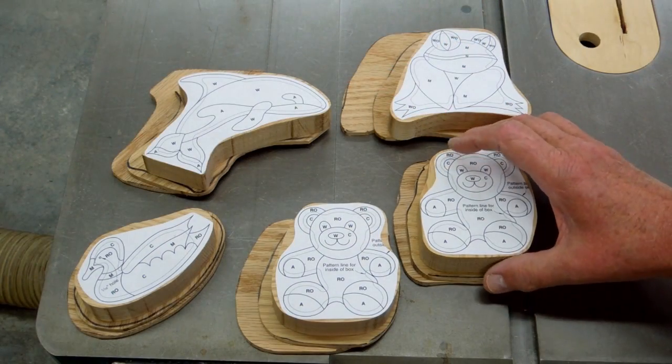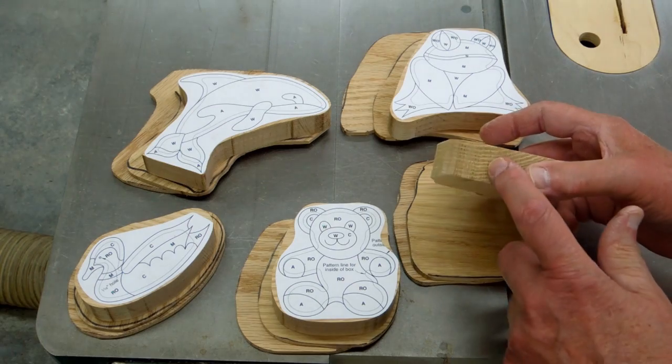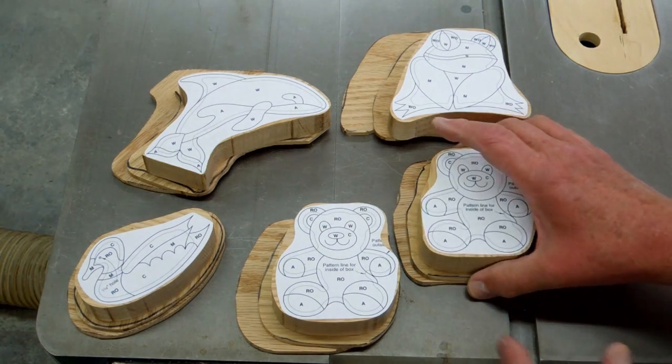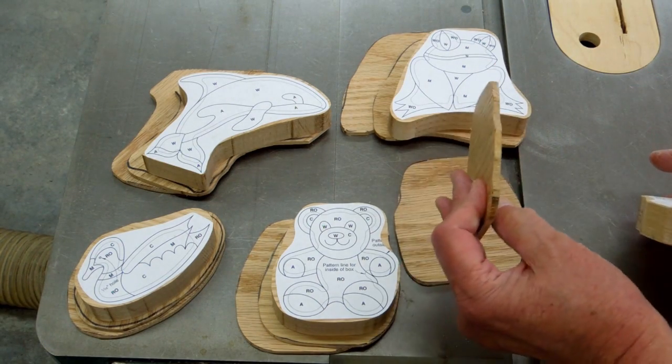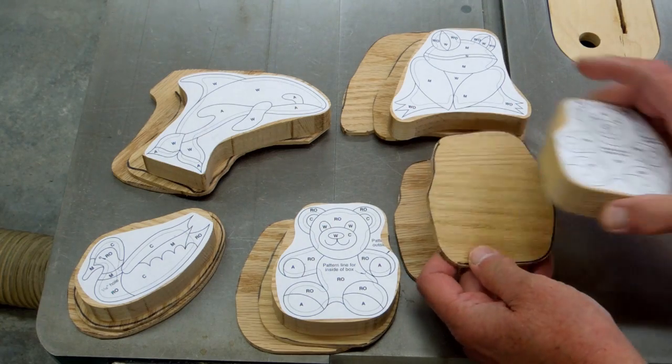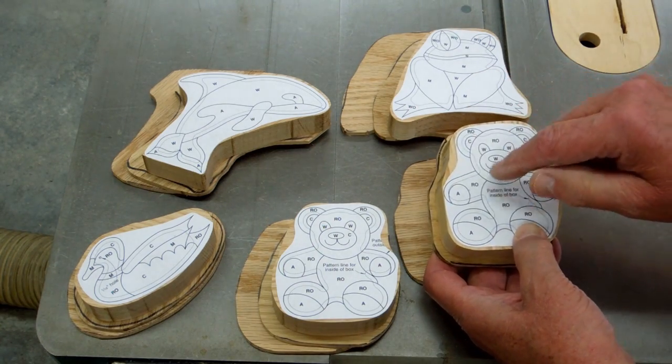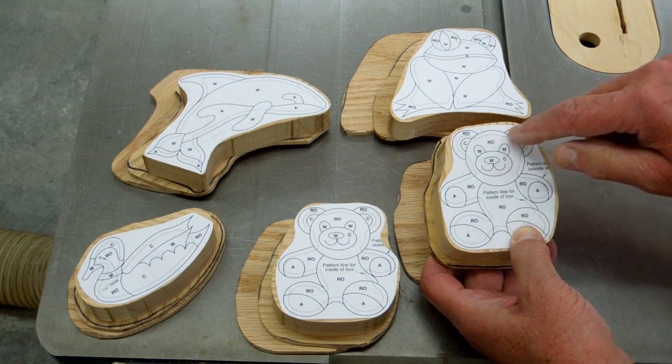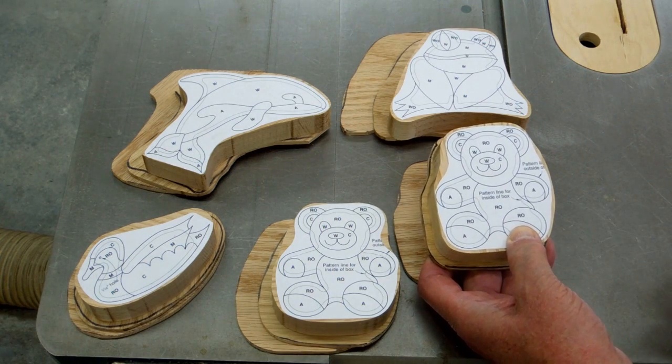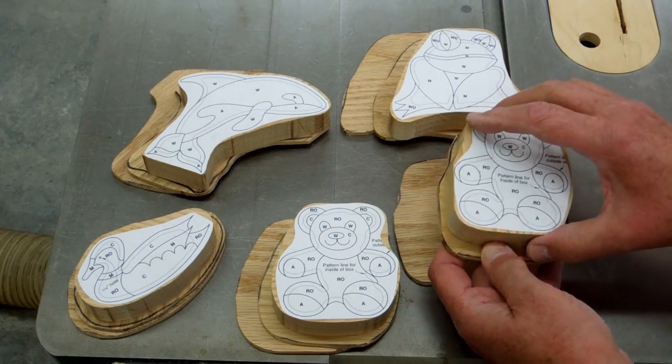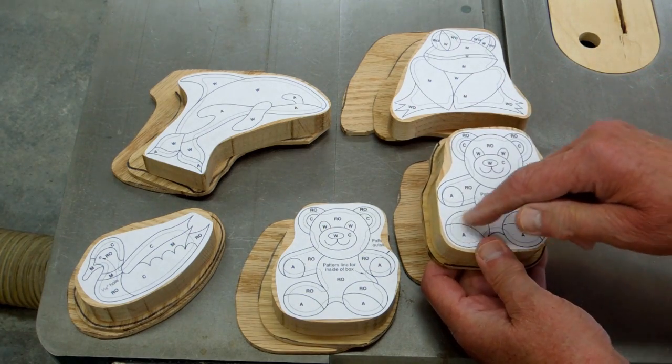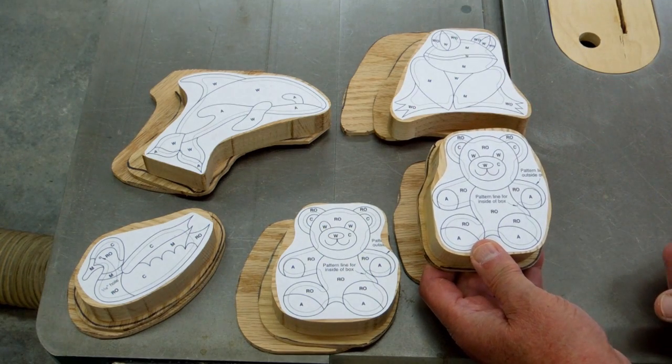I have most of the blanks cut out. The pattern is glued to the thick piece of wood. It will be attached to one of these thinner 3/16 inch pieces with double sided tape. I'll drill a hole in here and cut this out on the inside dotted line which is the inside of the box, and then this piece will end up becoming the inside portion of what will be the lid.